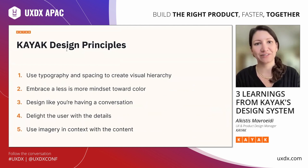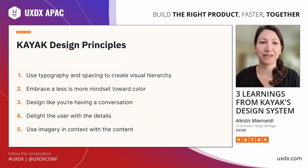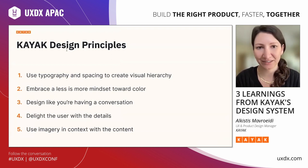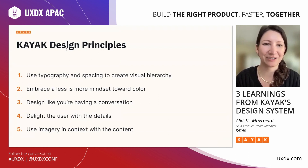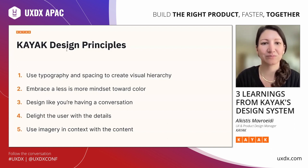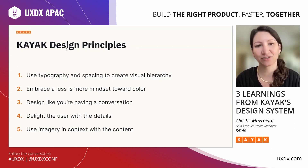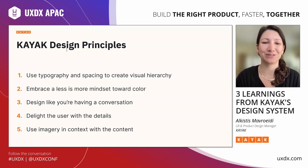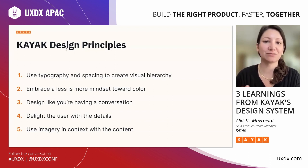We also have guiding principles that help us make decisions as we build our design systems. These principles have helped us efficiently build our components and scale our designs. Here they are in summary: one, use typography and spacing to create visual hierarchy; two, embrace a less-is-more mindset towards color; three, design like you're having a conversation; four, delight the user with the details; and five, use imagery in context with the content.